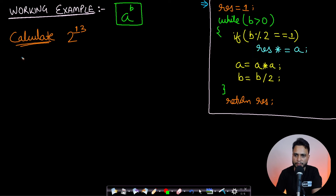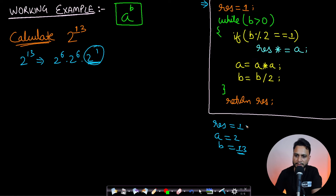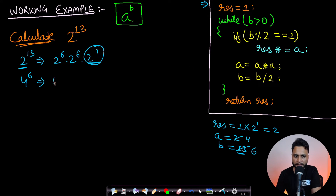Variables: result = 1, a = 2, b = 13. Step 1: b > 0 is true. Since b = 13 is odd (13 mod 2 ≠ 0), we save the extra base into result: result = 1 × 2 = 2. Then square the base: a becomes 4, and halve the exponent: b becomes 6. Step 2: b = 6 is even, so no update to result. Square the base: a becomes 16, halve the exponent: b becomes 3. Next problem to solve is 16 to the power 3.